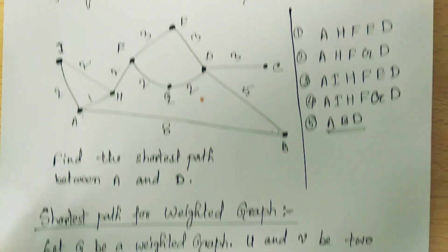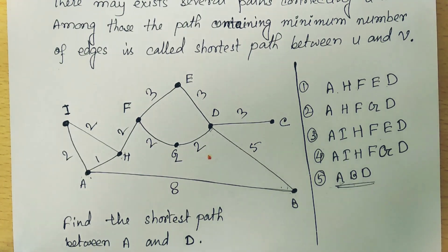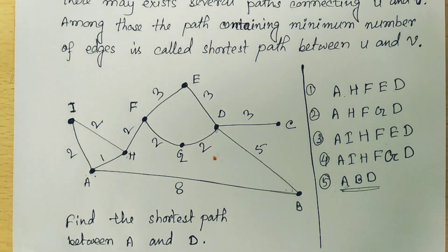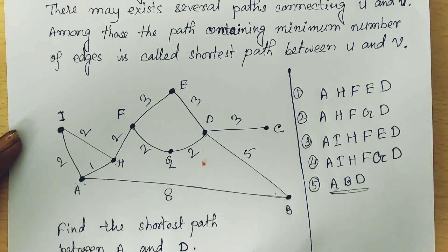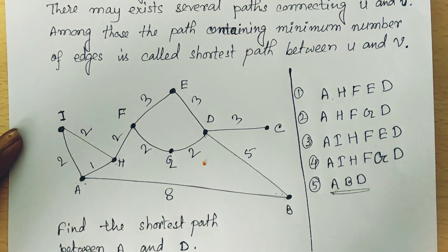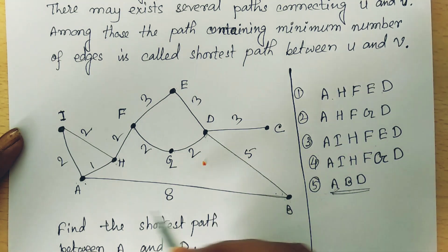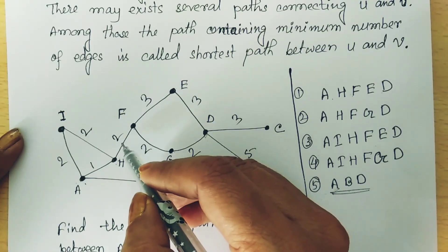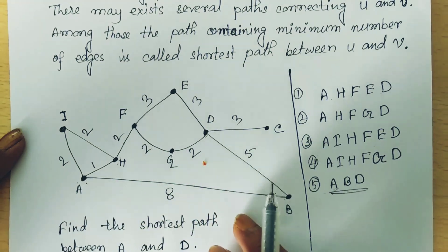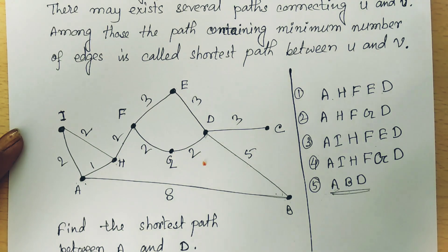Now it becomes a weighted graph. If for this graph we want to find the shortest path between A and D, then A to B, B to D may not be the shortest path. Because if the graph is weighted, we should add the corresponding weights of the edges for all selected paths.